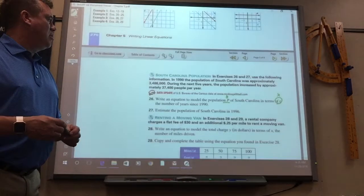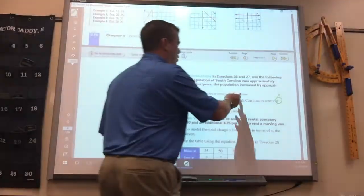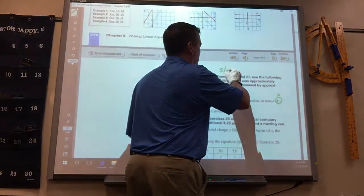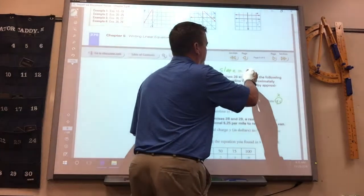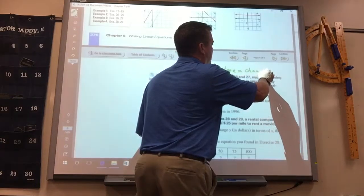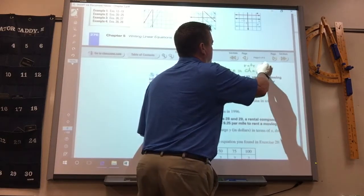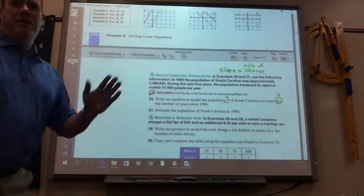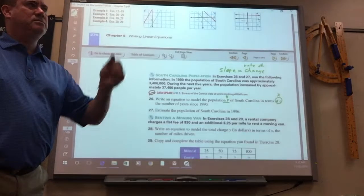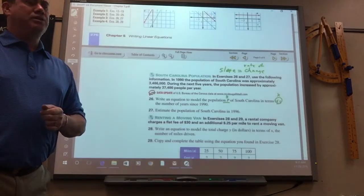Now, remember slope. When you're doing a word problem, slope is the same thing as the change, rate of change. B is the starting point, the initial point.